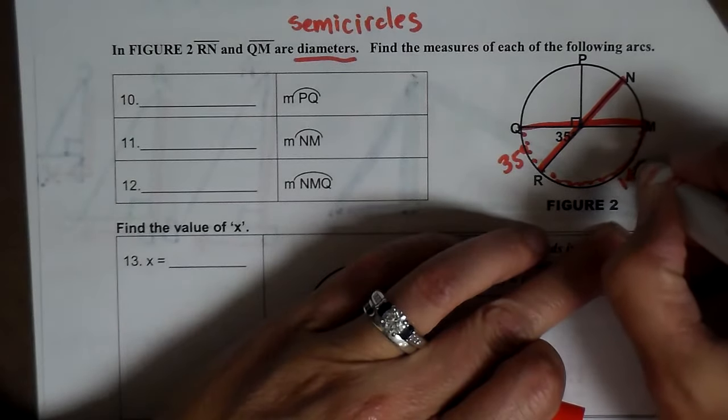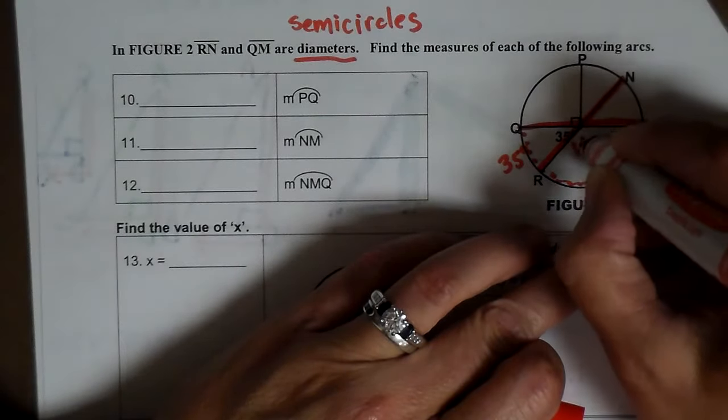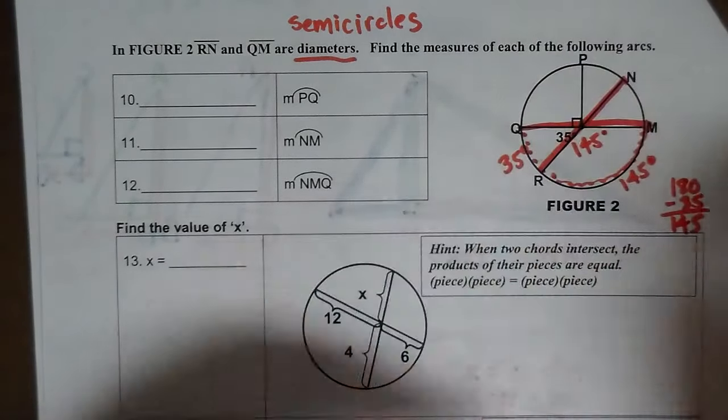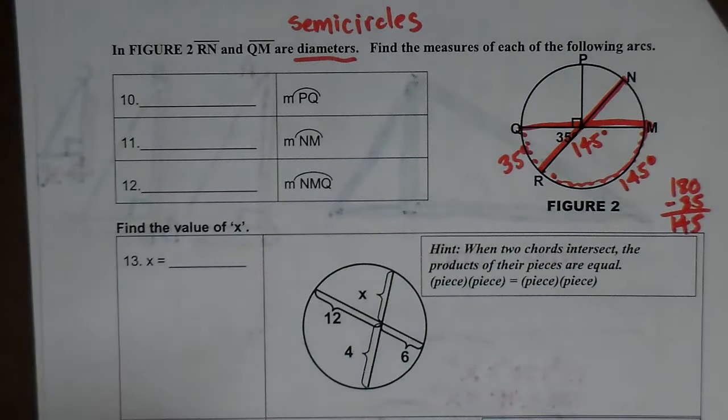And I end up getting 145. So this arc is 145. Which means this angle is also 145. Okay. Let's look at the other sides.